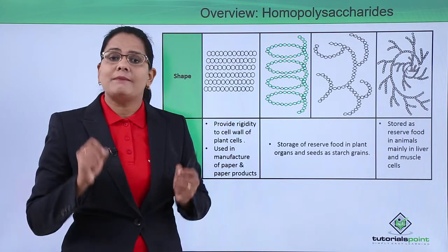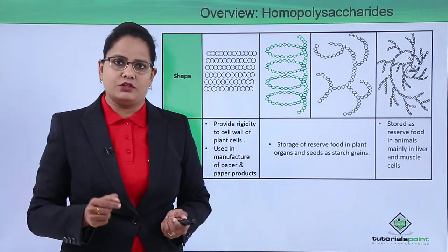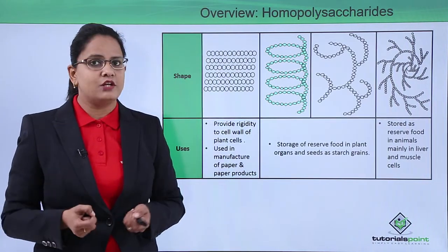Amylopectin is branched but little less branched as compared to glycogen.